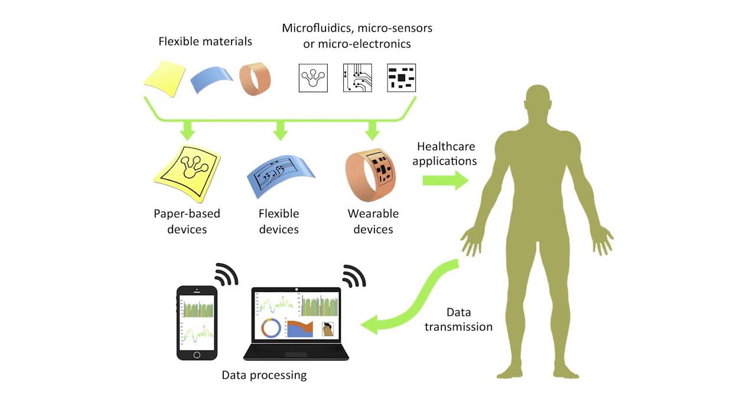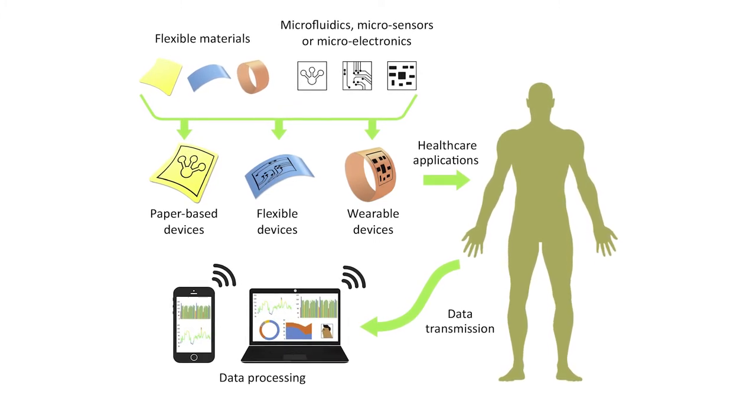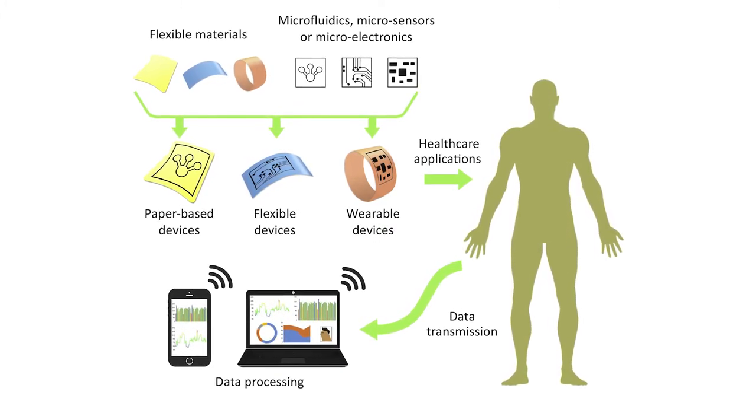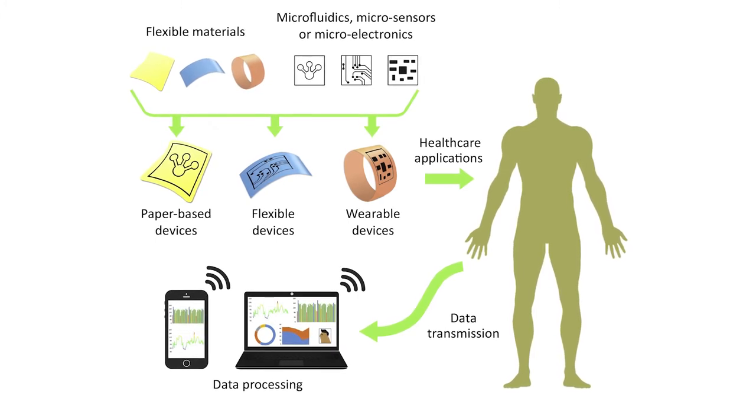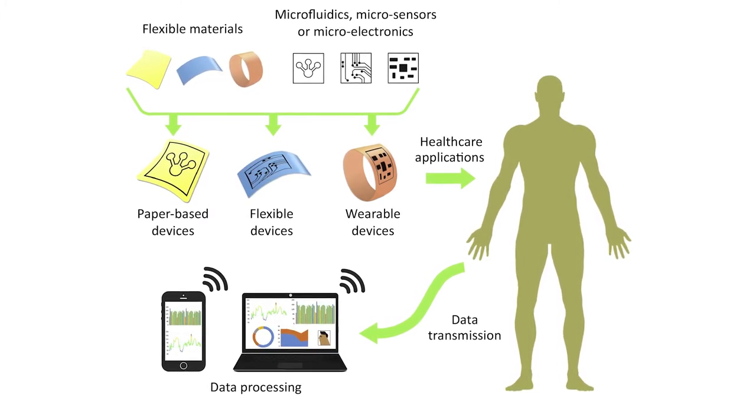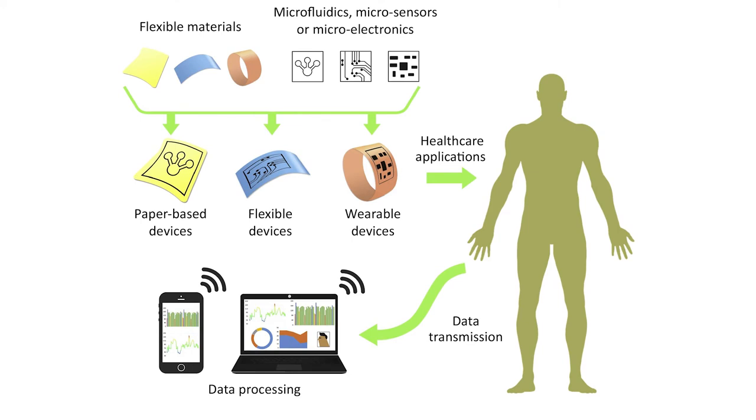Once the sweat is actually collected inside the patch, this can be analyzed either through some optical measurements that can be collected with a cell phone or some external reader, or by using electrodes that are part of the patch. In this case, we're doing electrochemical detection, typically to detect the concentration of different analytes in the sweat.